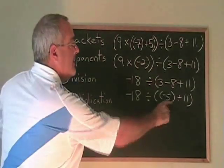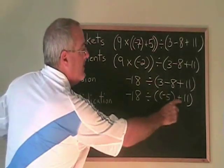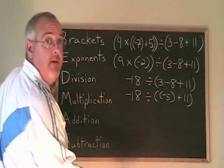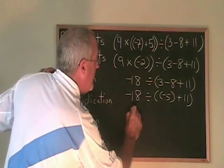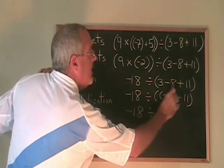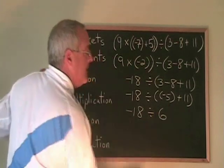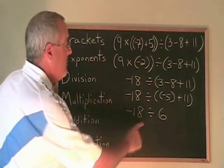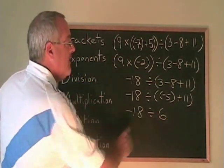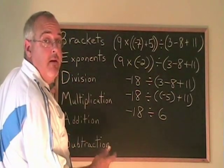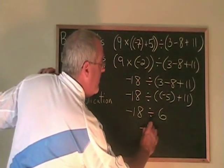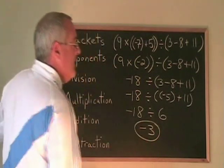All that's left in this bracket now is negative 5 plus 11. And negative 5 plus 11 is 6. I copy down negative 18 divided by, and this bracket is now just a 6. Finally, I can do my division. Negative 18 divided by 6, if we apply the laws of integers, gives negative 3 as its answer. We are done. This is how you do BEDMAS problems involving integers.